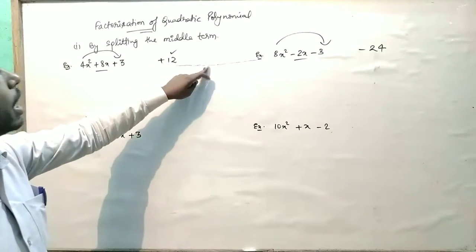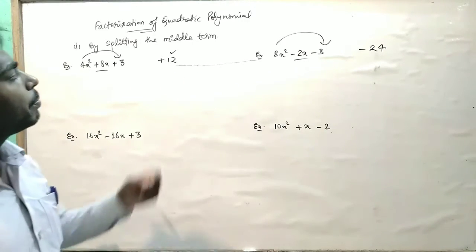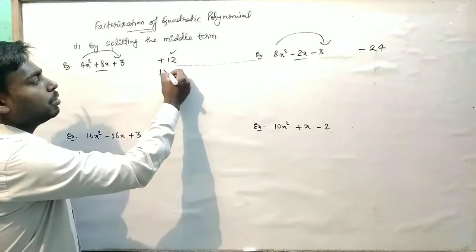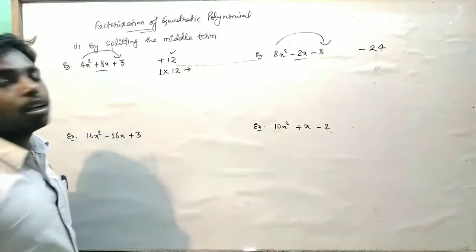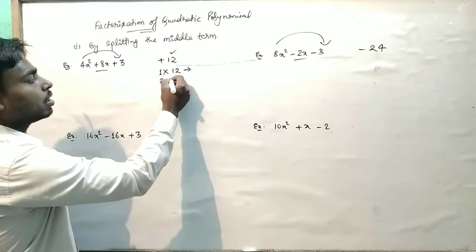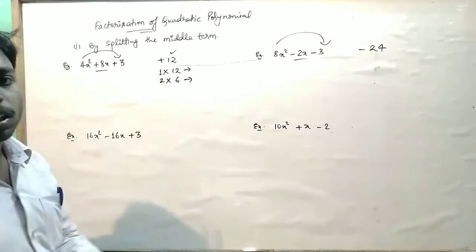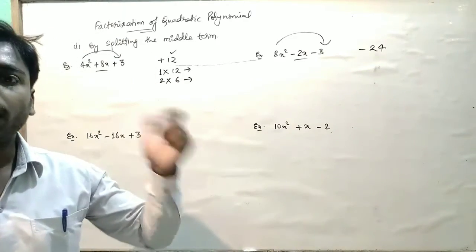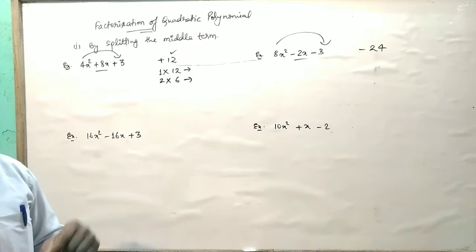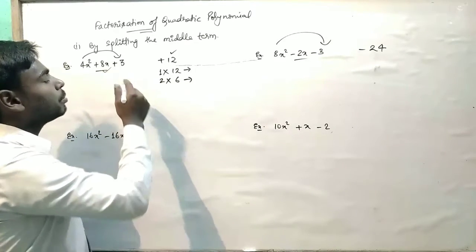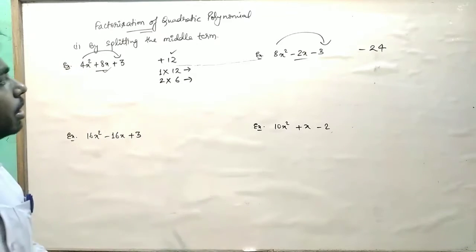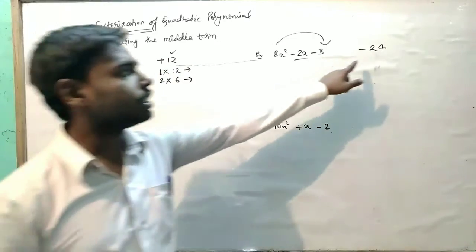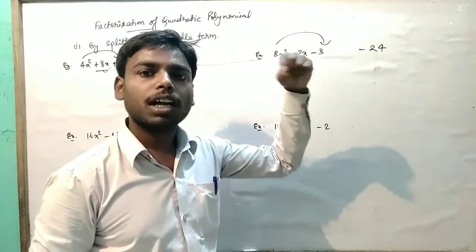अगर positive 12 मिला है तो multiplication factors of 12 find करेंगे: 1 into 12, and 2 into 6. अब इसमें add करके देखना है कि middle term मिल रहा है या नहीं। If we get sign positive, we will add. If we get sign negative, then we will subtract.